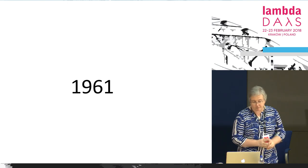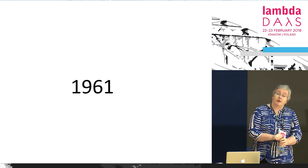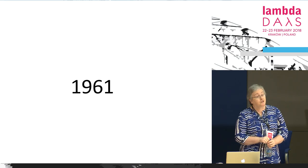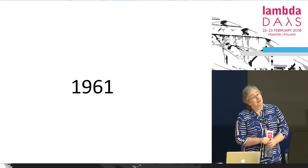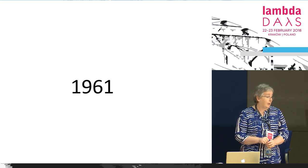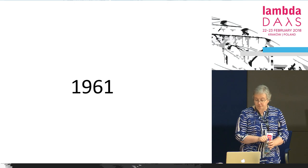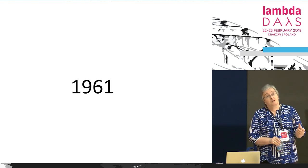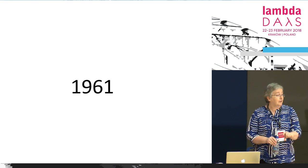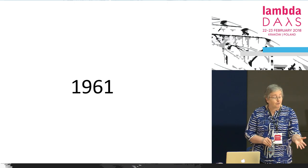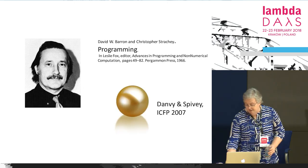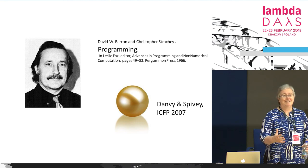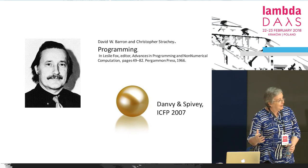In 1961, Strachey started to experiment with higher-order functions. Map was already known, but he developed two higher-order functions he called R1 and R2 — what we now call fold-right and fold-left, two versions of reduction. He lectured about them in a summer school in 1963 in Oxford. David Barron then wrote up the lectures from a tape recording, making a paper published in 1966. The title of the paper is wonderful: it's called 'Programming' — those were the days when you could write a paper called Programming.